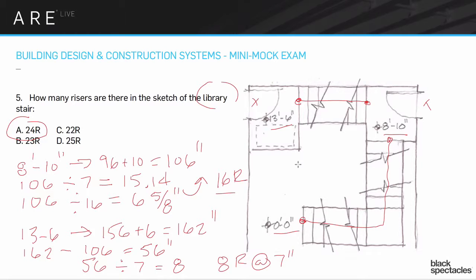The answer is 24: 16 plus 8. The process is simple: start by dividing by 7 to get a ballpark, then round up if needed — which most of the time you will, since it's pretty rare to get a nice even number. Then divide by that rounded number to get both the riser count and the exact riser height. You'll be able to do this in your sleep with practice.